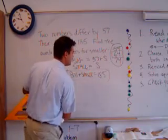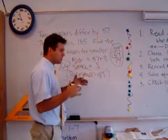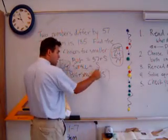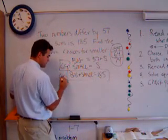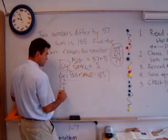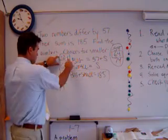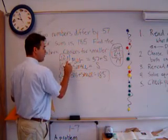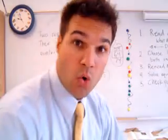So we have 64. But what is 64? It is S, the small number. Step four says solve the equation and find the unknowns. We found one unknown; we still need the other, which is 57 more. 64 plus 57 is 121. Let's double-check: that's definitely 57 more, and do they add up to 185? 4 and 1 is 5, 12 and 6 is 8 — yes, it works! One more problem and we're done with this section.